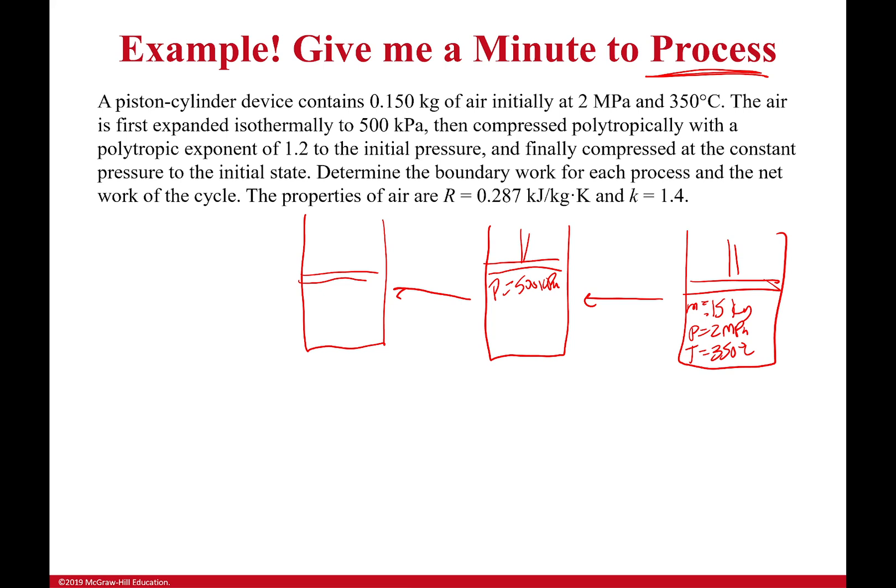At the constant pressure to the initial state. Wait, to initial pressure. Okay. So it's going back to P equals 2 megapascals. This is now the initial pressure. And then finally it goes to the initial state again, so I don't even need to draw that. I can just say it's going here. So I had isothermal right here, polytropic right here, and then the last one is a constant pressure process.